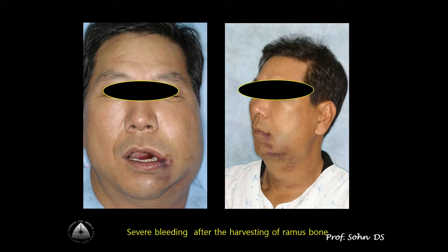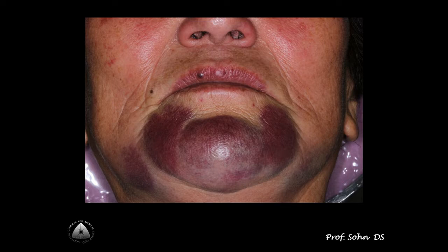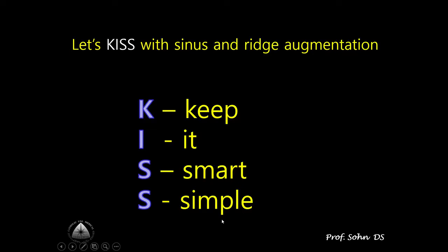This slide shows severe bleeding due to arterial damage during harvesting ramus bone. Take a close look at the huge swelling from eye to neck — this patient was referred to our emergency department. The damaged artery was clamped and tied, and this patient was admitted for three days to compensate for blood loss. Another slide shows severe ecchymosis and swelling after harvesting chin bone, which takes at least one month to resolve, and patient quality of life is significantly impaired.